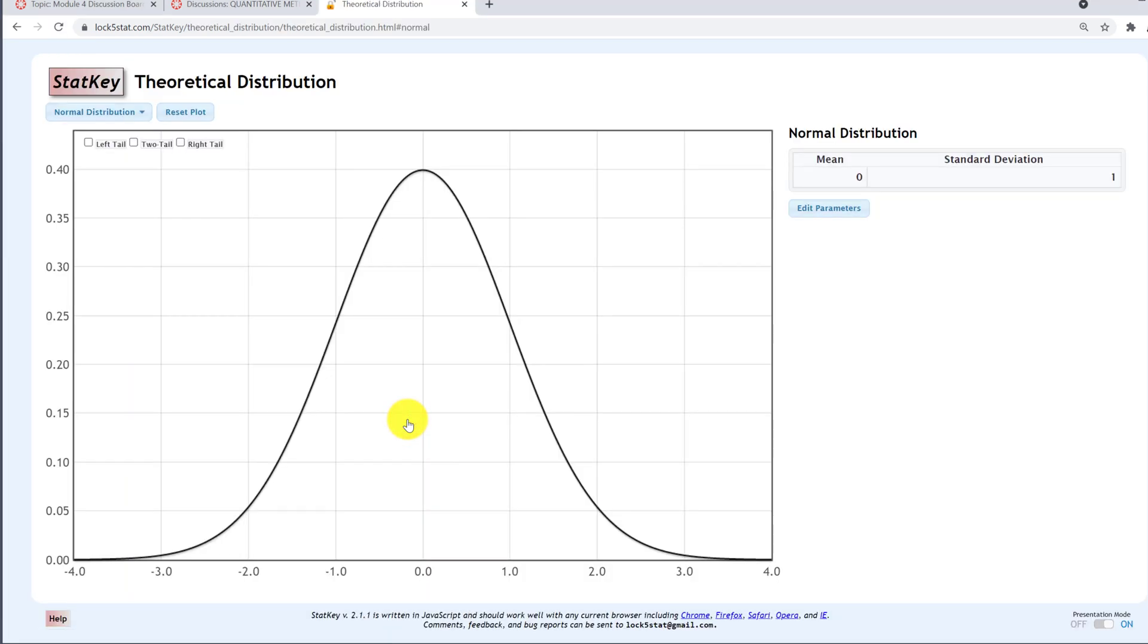The default normal distribution in StatKey has a mean of 0 and standard deviation of 1. That is our Z distribution. The Z critical values are going to be the Z scores that separate the middle 95% of this distribution from the outermost 5% of this distribution.